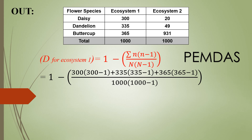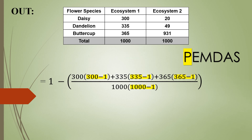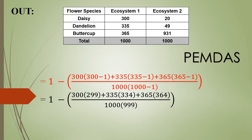So now I have replaced each one of those n's with an actual number. We're going to use order of operations to solve this, but first we need to calculate what's inside the parentheses. So we're going to do 300 minus 1, 335 minus 1, 365 minus 1, and 1000 minus 1. So we have 299, 334, and 364.